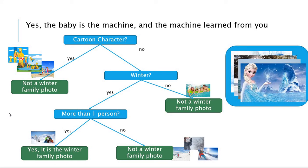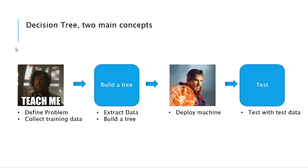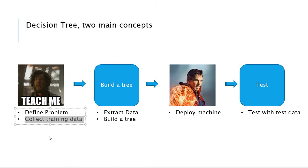As you already know, this baby is the machine, and the machine learned from you. Congratulations! This decision tree has two main concepts. At first, the machine doesn't know anything, like a baby. We need to define the problem, and we need to give it pictures like we gave pictures to the baby. We also need to extract the data from our training set — I'm going to show you on the next page.